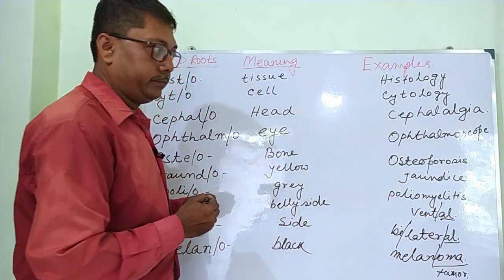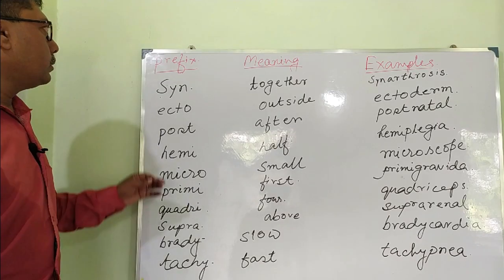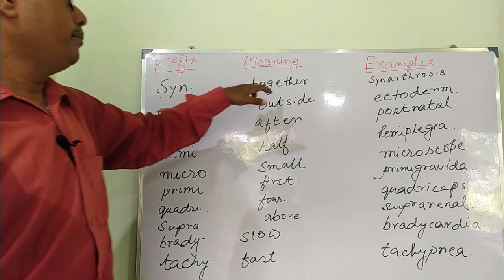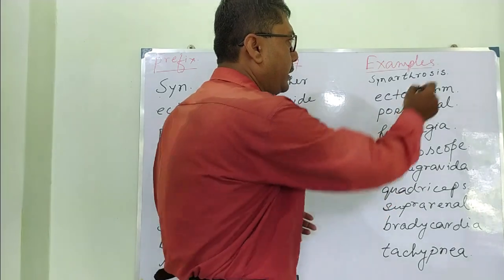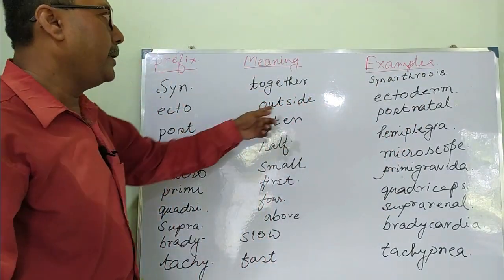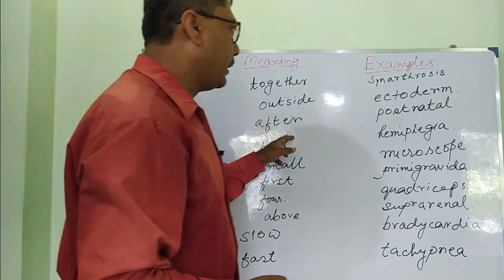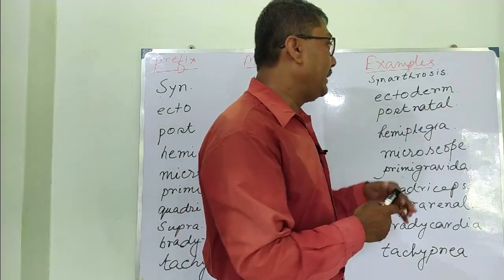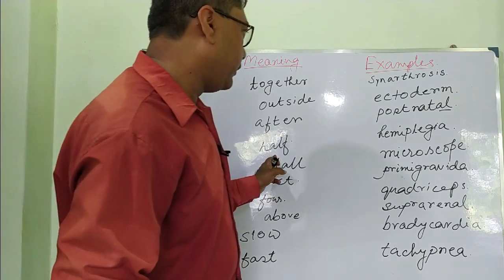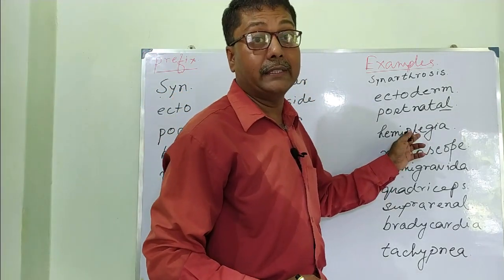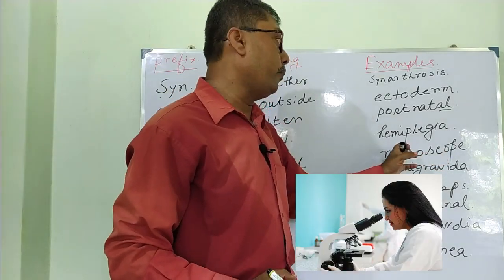Now here are some prefix examples. 'Syn-' means together — example: synarthrosis, where 'arthro' means joint and '-sis' means condition, so it is the condition of joints together. 'Ecto-' means outside — example: ectoderm, where 'derm' means skin, so it is the outer skin. 'Post-' means after — example: postnatal, meaning after birth. 'Hemi-' means half — example: hemiplegia, meaning paralysis of half the body. 'Micro-' means small — example: microscope, an instrument to view small things.